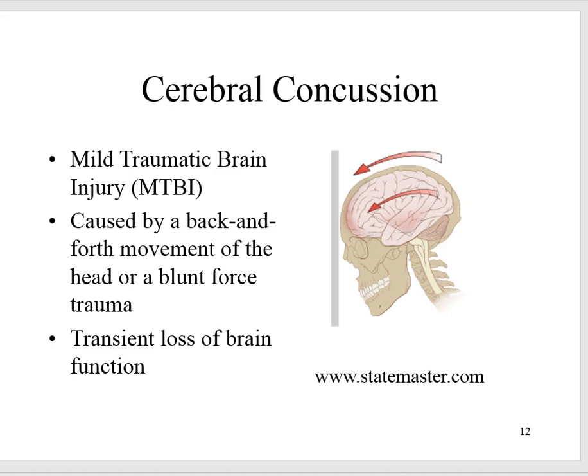Cerebral concussion — from the Latin 'concutere,' meaning to shake violently. This is a mild traumatic brain injury caused by a back-and-forth movement of the head or blunt force trauma. It's associated with a transient loss of brain function, occurring when a violent blow causes the brain to slam against the skull beyond the ability of cerebrospinal fluid to cushion the impact. If the frontal lobe is affected, the patient may exhibit bizarre or irrational behavior — changes in thinking, deciding, remembering, or personality. If the temporal lobe is affected, the patient may become temporarily disoriented or have temporary amnesia. In a cerebral concussion, damage is widespread and microscopic — it cannot be seen on a CT or MRI.